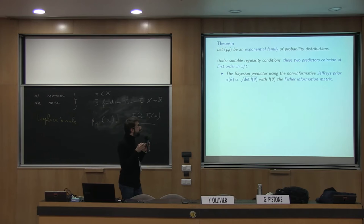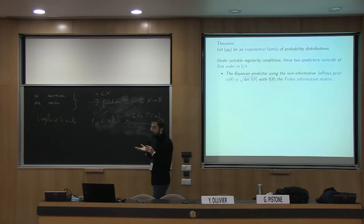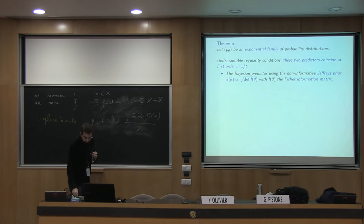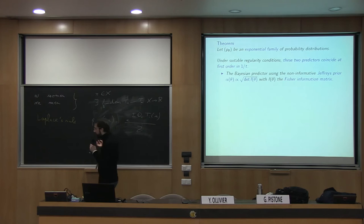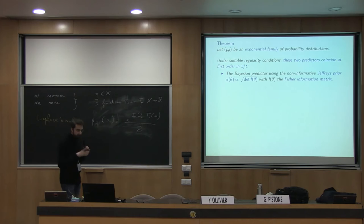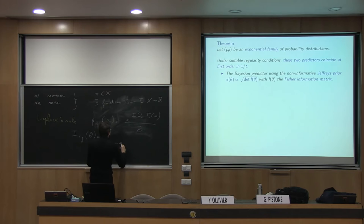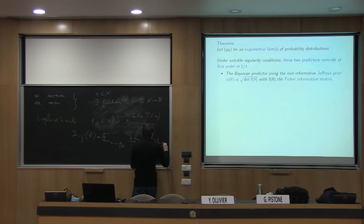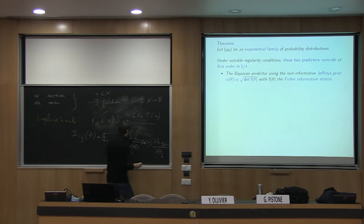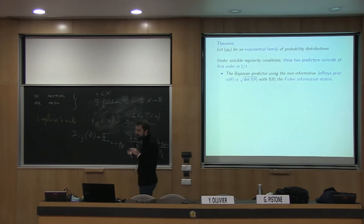This canonical prior is given by the Fisher information matrix. If you have a family of probability distributions, you can turn the space of theta into a Riemannian manifold with the metric given by the Fisher information matrix — which is the product of partial derivatives of log likelihoods. This defines a positive matrix usable as a Riemannian metric on the space theta. The associated Riemannian volume form is given by the square root of the determinant of I, called the Jeffreys prior.